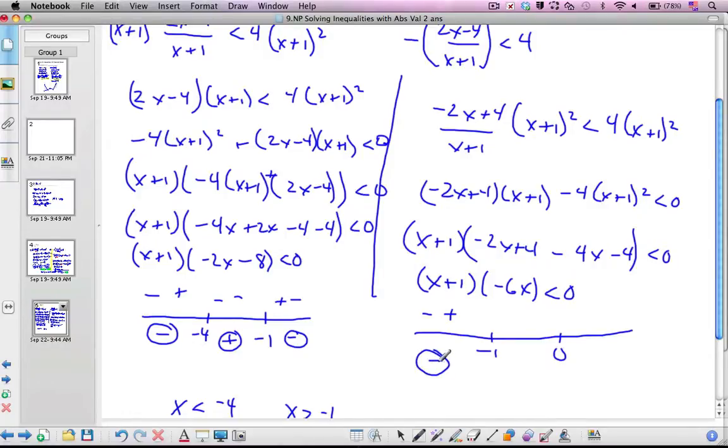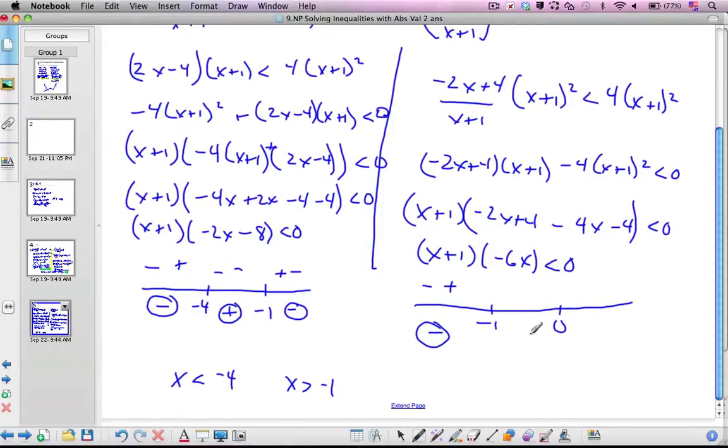Moving over to the next factor, I can see that if I pick negative 1 half, I'm going to get a positive value. Negative 1 half in here, make this positive, and together I have a positive scenario. Picking a large positive value makes this positive, makes this negative, and so all together it is negative.